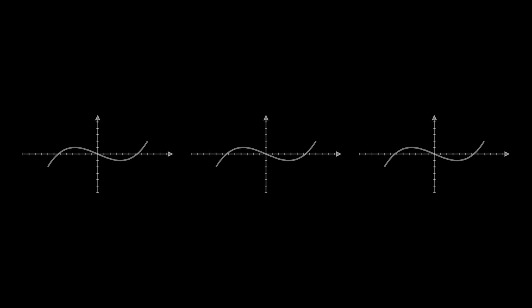For example, here we have three parametrizations of the same curve in the plane. The first two are equivalent to each other, while the third one is not equivalent to the other two.